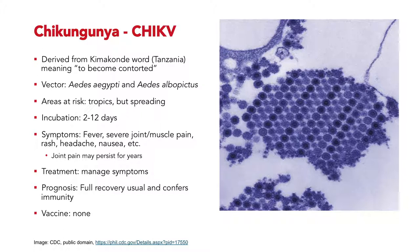Finally, chikungunya is an alphavirus — a different type from the flaviviruses — but it is also transmitted by Aedes aegypti. It was endemic to Africa and gets its name from a Kimakonde word meaning 'to become contorted,' because like dengue it causes severe joint and muscle pain. The scary thing about this one is that the pain can become chronic and last for several years. There is no specific antiviral and no vaccine, though the good news is that people who contract it generally develop immunity to subsequent exposures.